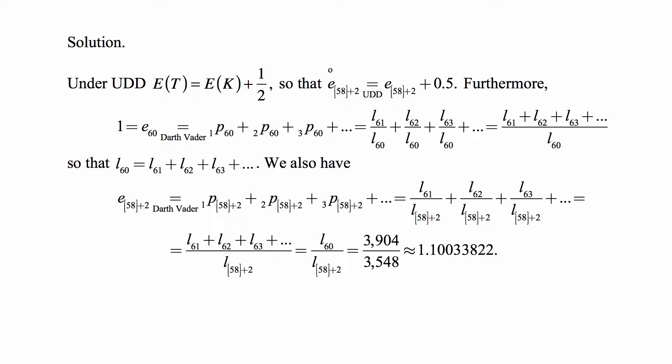You just add up these probabilities of survival to get the curtailed life expectancy. That's a version of Darth Vader rule that is very convenient. You should remember this for the exam.